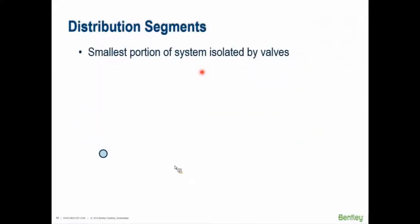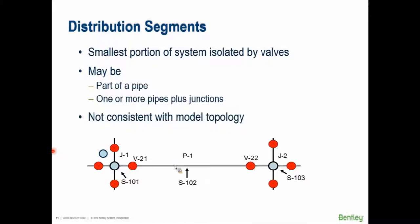Okay so a distribution segment is the smallest portion that can be isolated by valves. It may be part of a pipe, it could be several junctions. So here is an example of segment. In the screen below the red X's or the black X's on a red dot, those are isolation valves. The light blue is a junction. So can you look at the screen and tell me how many segments we have. I'll just do some cheating here. Segment 1, segment 2, and segment 3. Or we could have just looked at S101, S102, S103. Partially a trick.